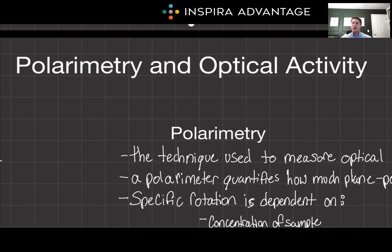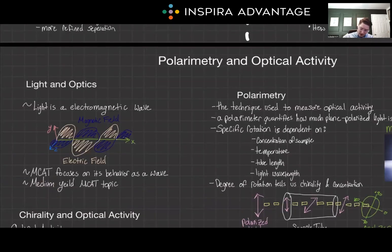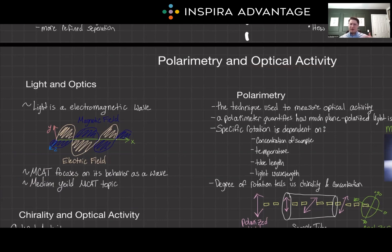In today's episode, we're shining a light on polarimetry and optical activity — concepts at the intersection of physics and chemistry that illuminate the properties of chiral compounds. Understanding these principles is crucial for both the MCAT and your future medical career. You can expect to see anywhere from two to three questions on the chem-phys section, and I've even seen questions on the bio-biochem section dealing with optical activity because they tie it to R/S nomenclature for amino acids. So this is definitely something you want to pay attention to.